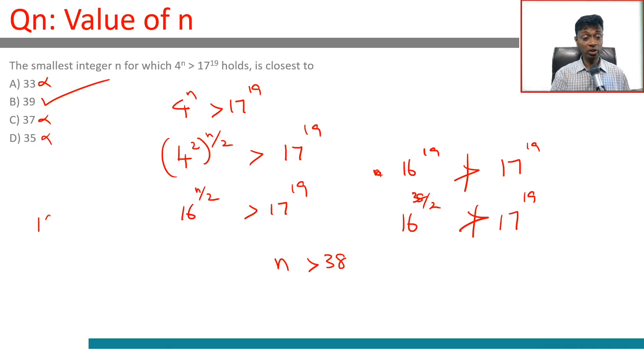We need to check that 16^(39/2) is greater than 17^19. It should be. This is 4 times 16^19 is greater than 17^19. So 4 is greater than (17/16)^19. This could be tough to prove.